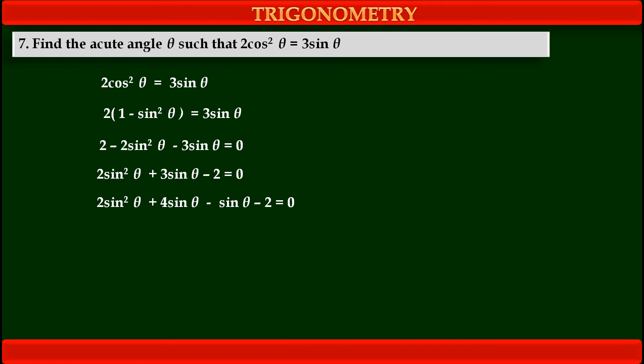So, now, we have to take common from first two terms as well as last two terms. See now, from first two terms, we can take 2sinθ common. So, we get 2sinθ into in bracket from first term remaining part sinθ plus from second term 2sinθ plus 2.